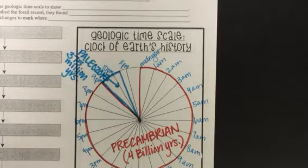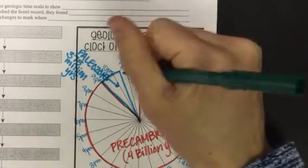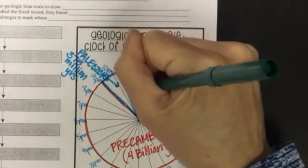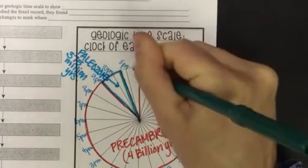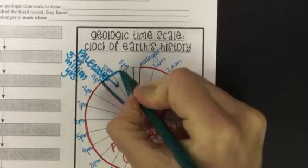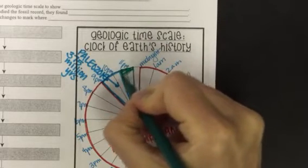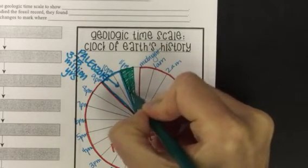Next is going to be green, which is going to be the Mesozoic. So we're going to go from 10:30 p.m. to around 11:30 p.m. And again, this is just a little estimate. So this chunk is going to be green.